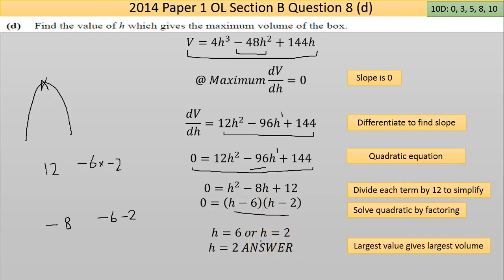I'm looking for, let's see now, the largest value. Find the value of h which gives the maximum volume of the box. So I'm looking here for h equals 2 is the answer. Now I have tested that by putting the 2 and the 6 into the original equation, and 2 gives the largest volume therefore it's the one you pick.